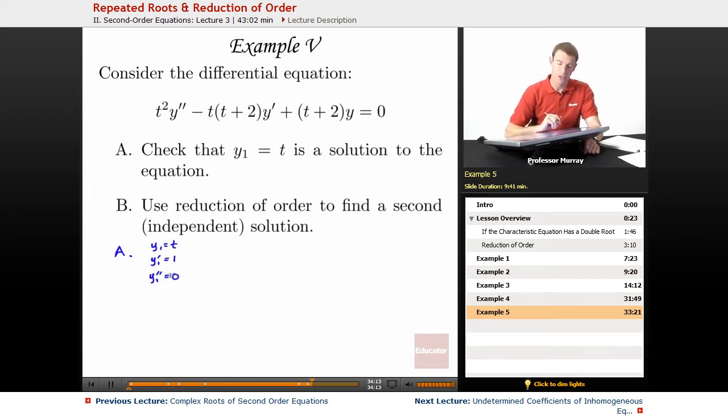We're going to plug all those into the differential equation and see if it checks out. So we get t squared times 0 minus t times t plus 2 times y prime, which is 1, plus t plus 2 times y, where y is t, and we're checking if that equals 0.